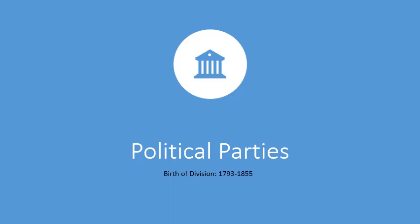Hey everyone, so for today's lecture we're going to be looking at the birth of political parties and the growth of division in the newly formed United States following the passage of the Constitution. This period begins around 1793 and goes up to about 1855, but this is really when political parties became a prominent part of the government and of American society.